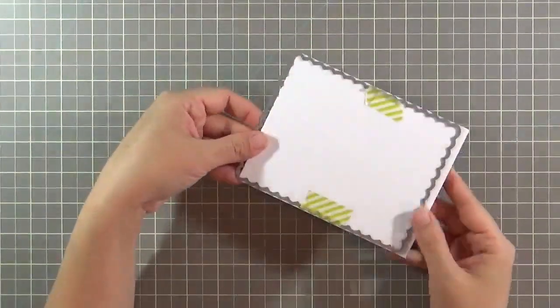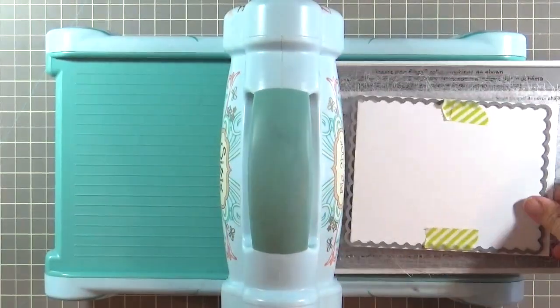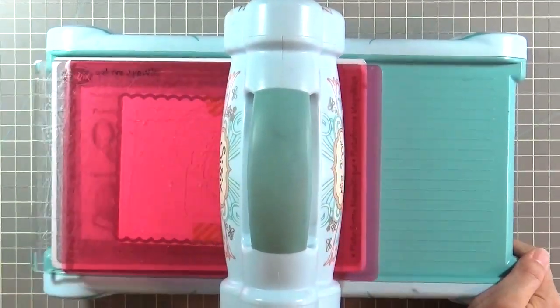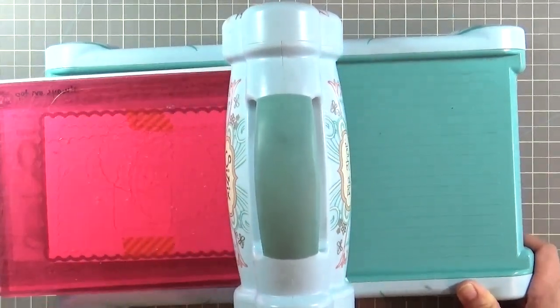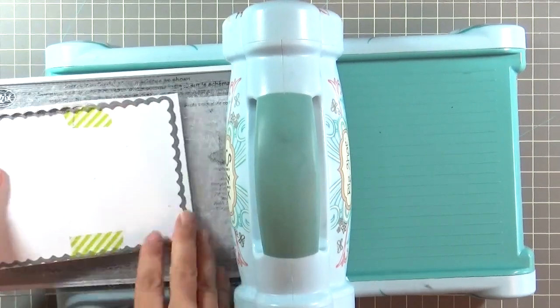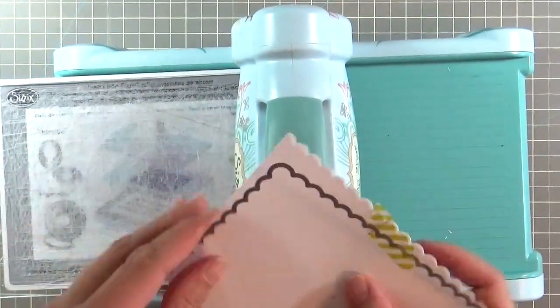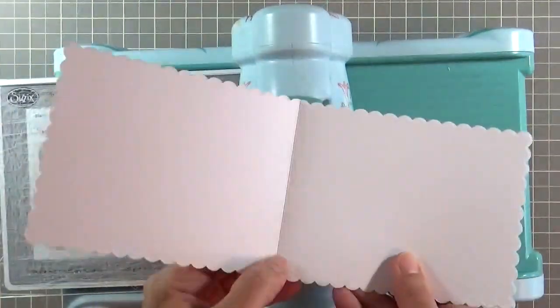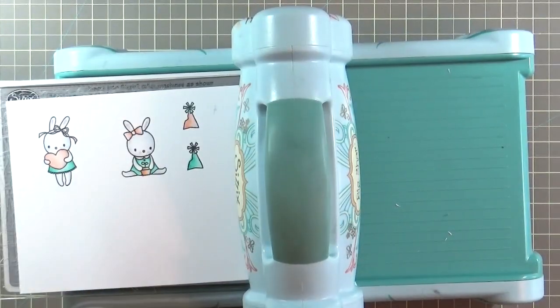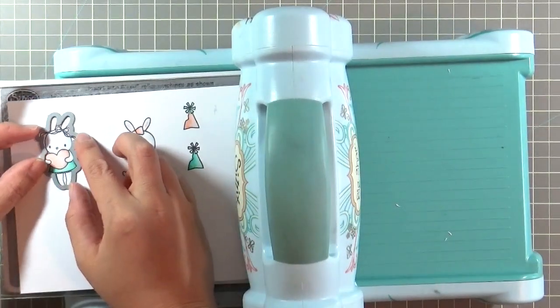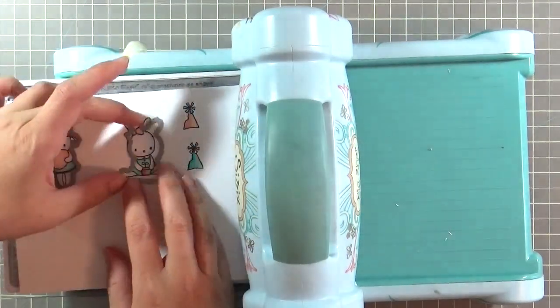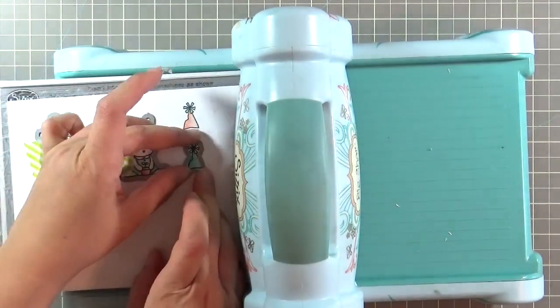So I'm going to do partial die cutting. So you'll see that top edge actually is not going to hit the die cutting machine. So when I run it through, only three sides will cut. And then the fourth side, I don't think I actually cut it all the way, but the fourth side will not cut. So now I have a scalloped card. I'm going to go ahead and die cut all of those other elements that we shared.